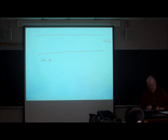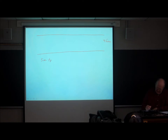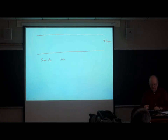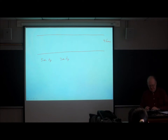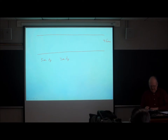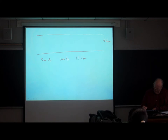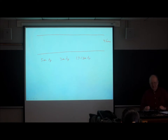These days, 5 micron particles are large particles. They went out about 10 years ago, when 3 micron diameter particles became common. Then a few years back, with the advent of sub-2-micron particles, 1.7 to 1.8 micron diameter particles came into play.